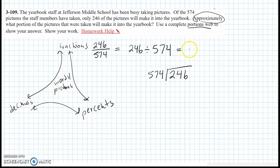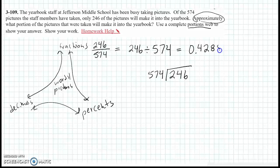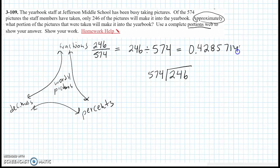246 divided by 574. And I will get a decimal that doesn't look like it's going to terminate. So 0.428571429. I don't know what comes after this. This 9 might have been rounded.